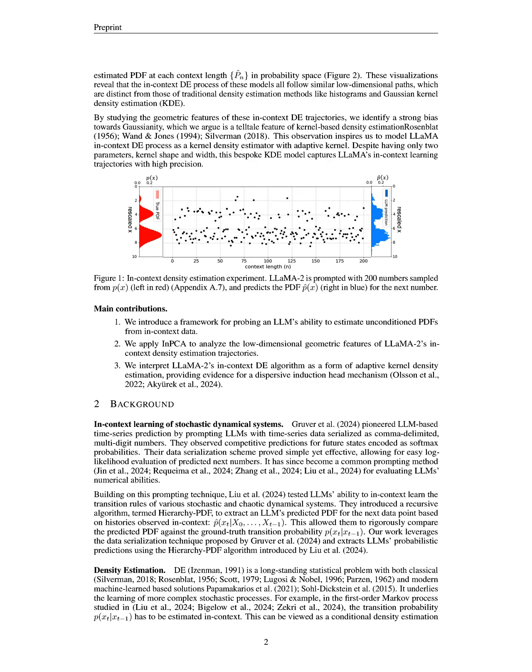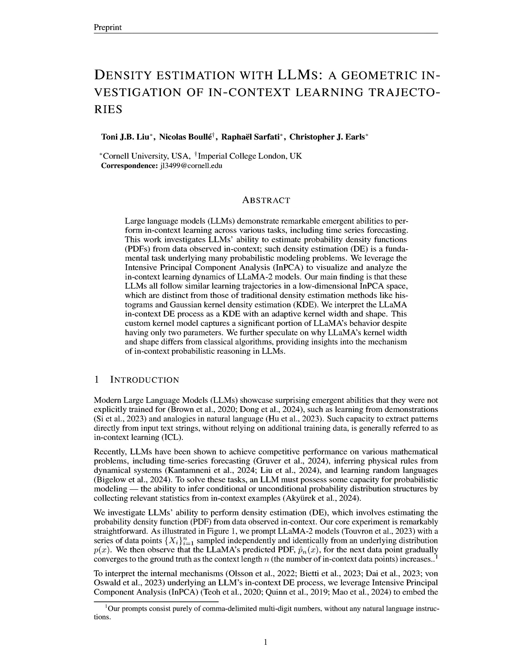The experimental design involved comparing LLaMA's in-context density estimation, DE trajectories, against classical methods like Gaussian kernel density estimation, KDE, and Bayesian histograms, using the Hellinger distance as the primary metric for evaluating the accuracy of the estimated probability density functions, PDFs. We specifically focused on the convergence of LLaMA's estimated PDFs to the ground truth as the number of in-context data points increased, observing that LLaMA's performance remained competitive, particularly with narrow Gaussian targets.